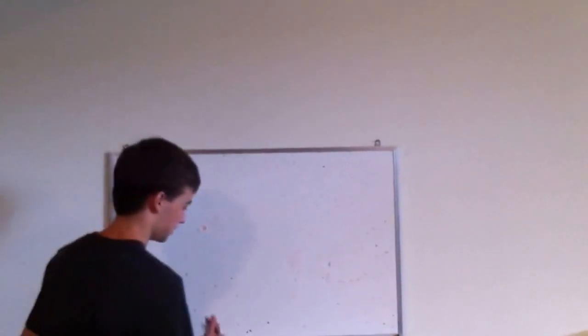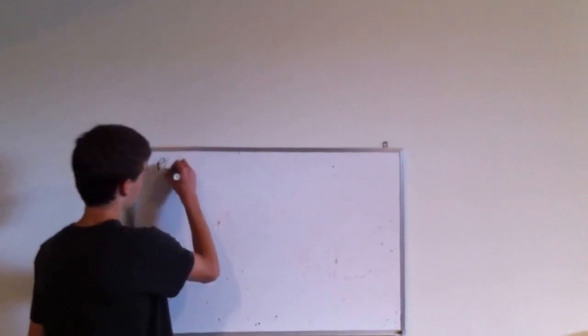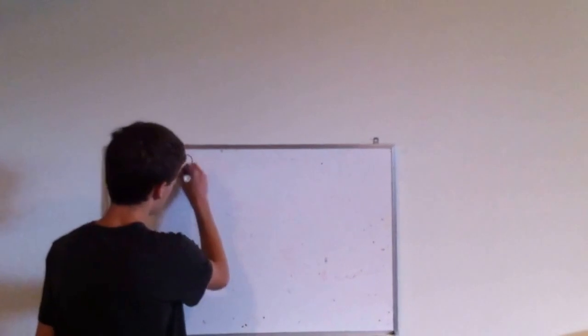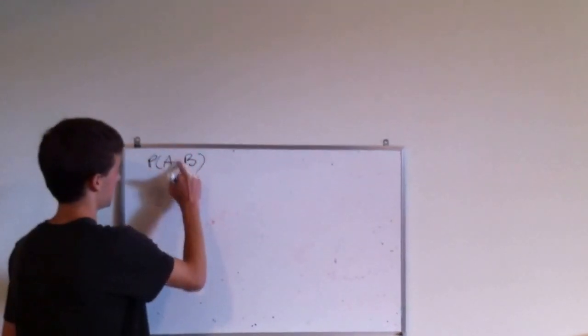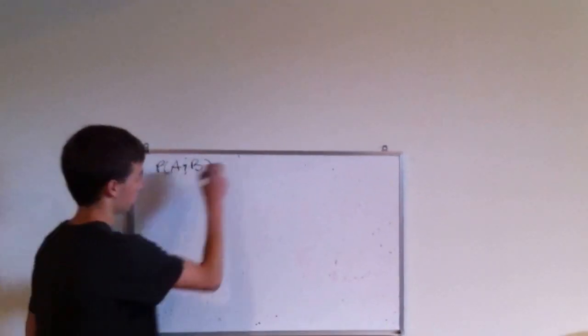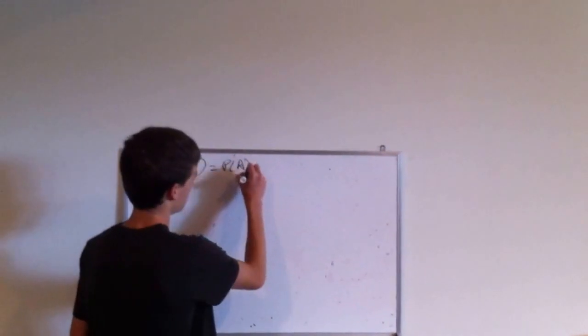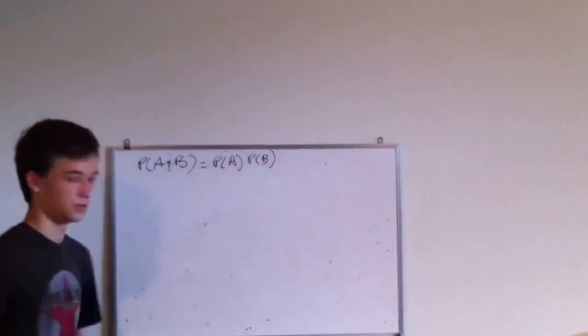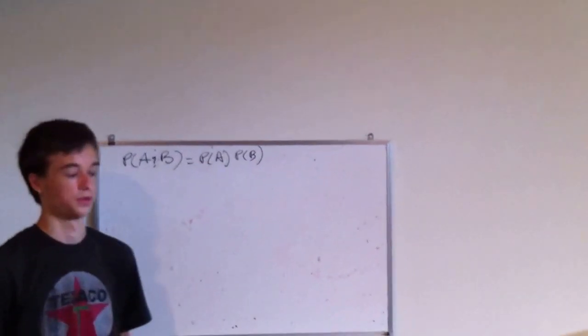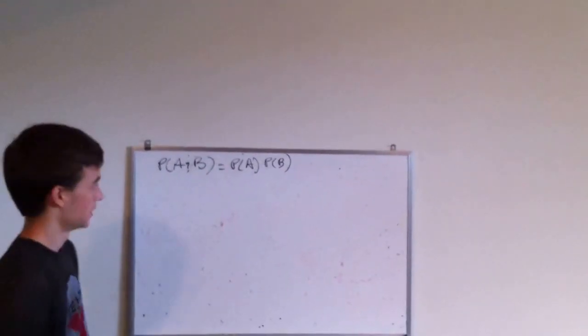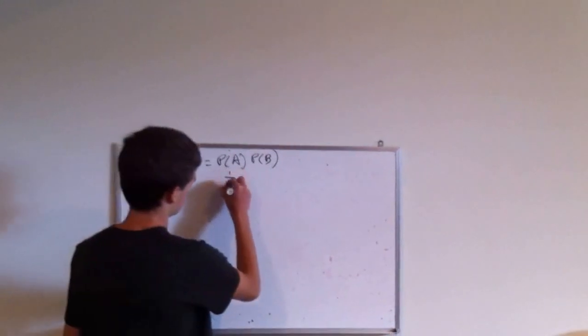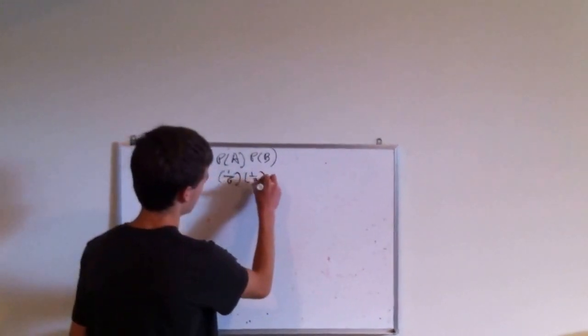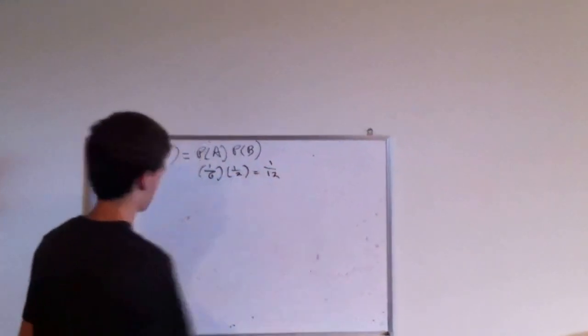Just to remind you of some probability things, if you have the probability of A and B, then it's just the probability of A times the probability of B. That would be like if you had the probability of rolling both a 6 and flipping heads, that would be 1 over 6 times 1 over 2, so your probability would be 1/12.